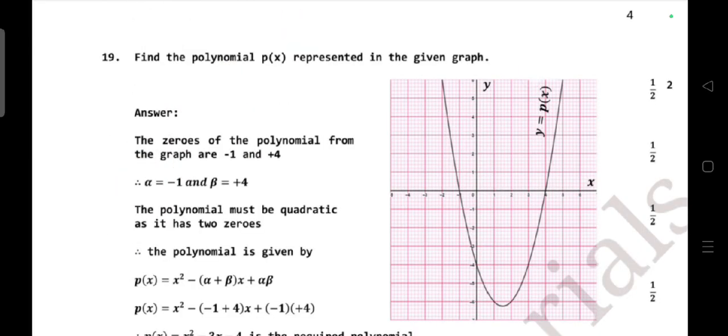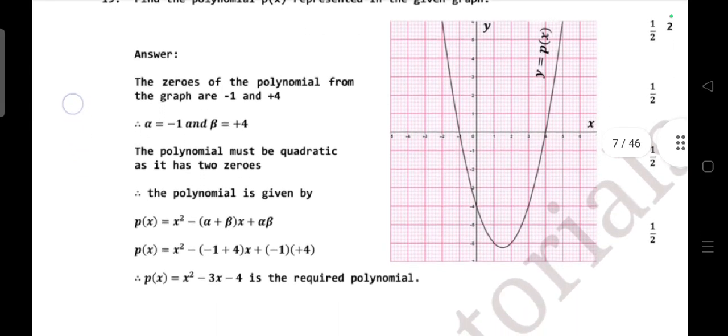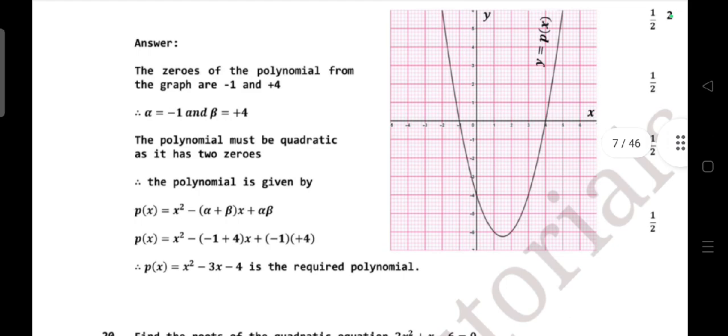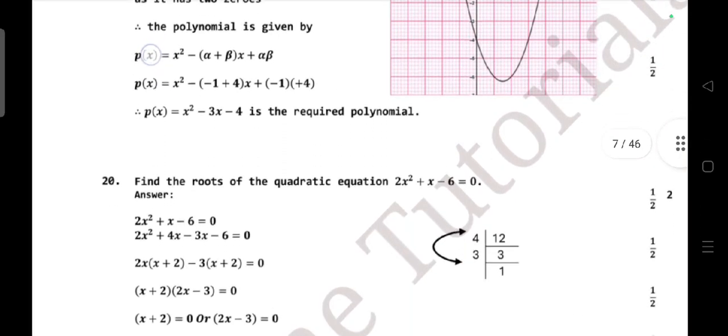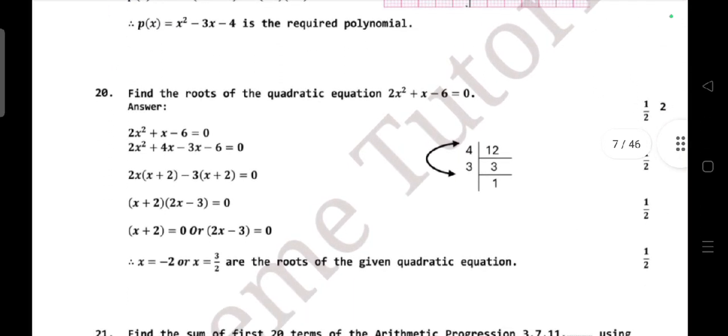Find the polynomial p(x) represented in the given figure. So here the zeros of the polynomial from the graph is -1, +4. Alpha is -1, beta is 4. Therefore the polynomial must be a quadratic equation with two roots. Answer is x² - 3x - 4 is the required polynomial. Find the roots of the quadratic equation 2x² + 6x - 6 = 0. Take the answers if you want.